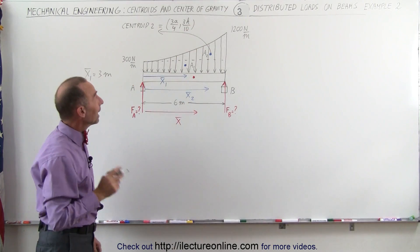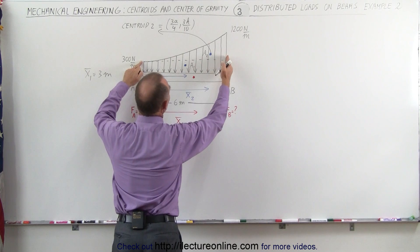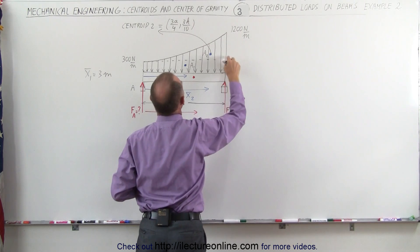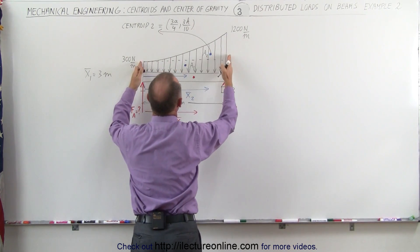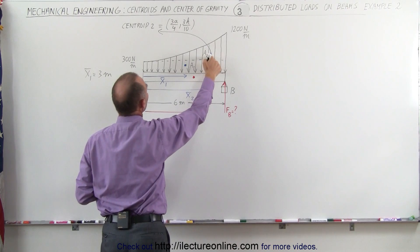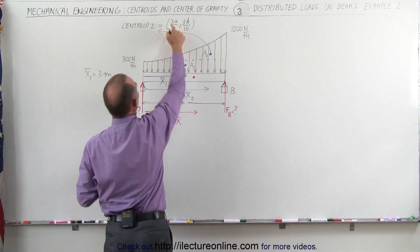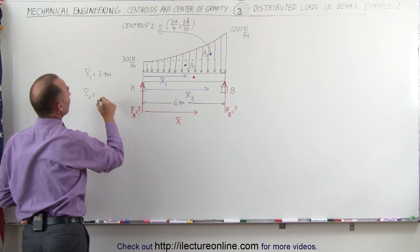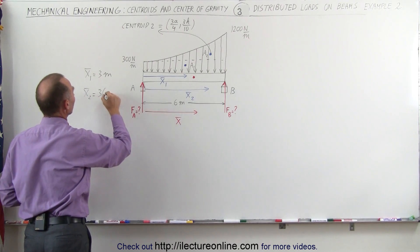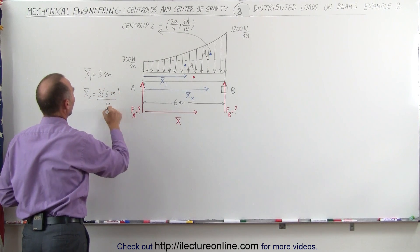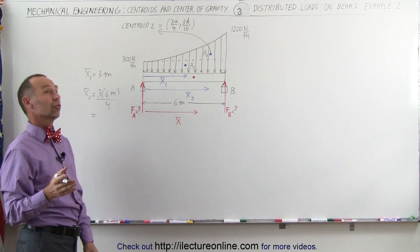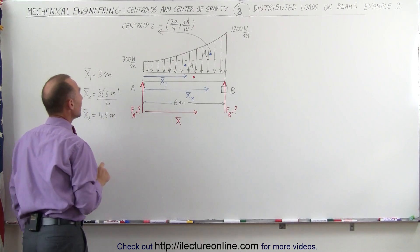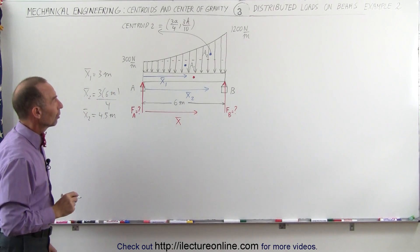A is the horizontal value — in this case 6 meters — and H is the vertical distance. We only care about the horizontal distance, so the x-coordinate of the centroid of the parabolic portion equals 3 times the full beam length divided by 4. Therefore x sub 2 equals 3 times 6 meters divided by 4, which is 18 divided by 4, giving us 4.5 meters as the centroid of the parabolic portion of the distributed load.